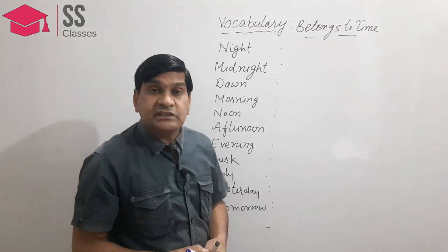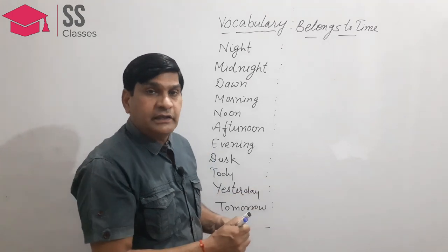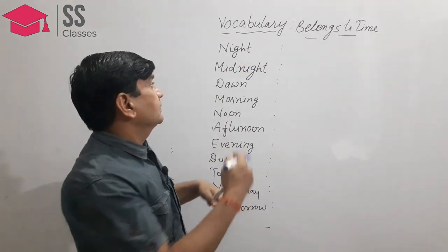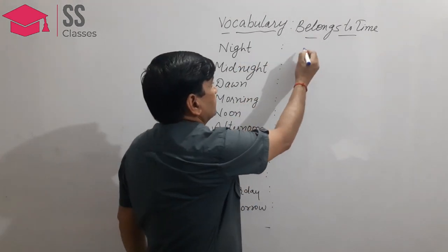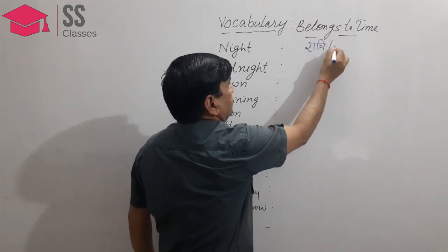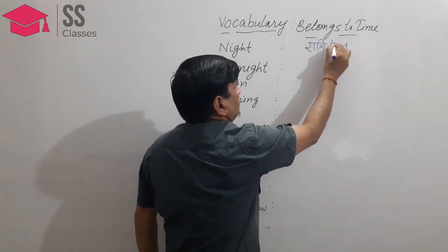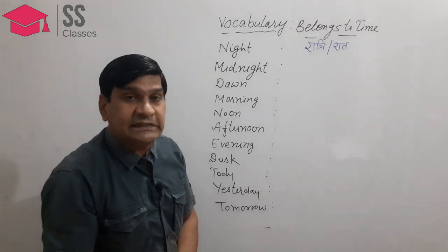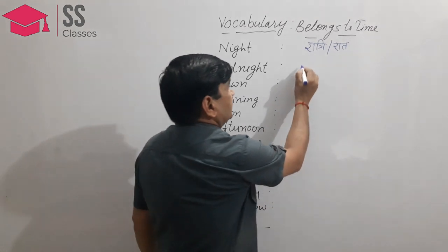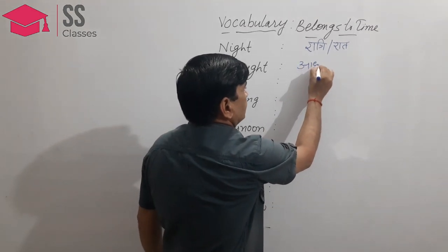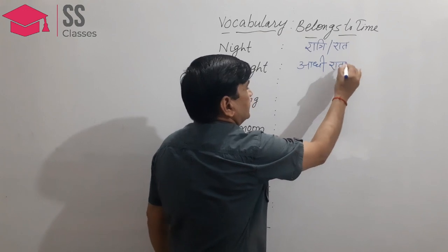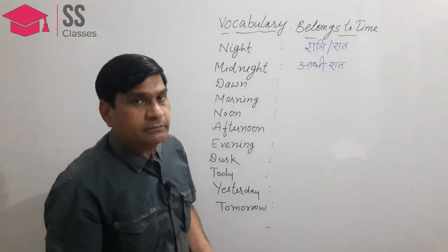Our next words are here. It starts with night — raatri, or we can also say raat. Midnight — adhi raat, which in Hindi we can say adhi raat or madhya raatri.